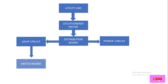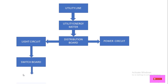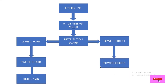From the light circuit, power is fed to the switchboard, and finally to our lights and fans. For the power circuit, the distribution board feeds power to home appliances used in the kitchen, like a rice cooker, kettle, oven, or mixer grinder. These home appliances are operated through the power circuit outlets.